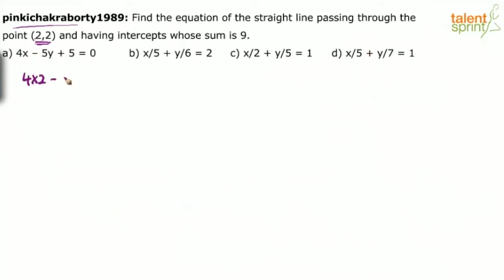Substitute in option A: 4 into 2 minus 5 into 2 plus 5. Is it equal to 0? 4 into 2 is 8, 8 plus 5 is 13. 13 minus 10 is equal to 3, which is not 0. So first option is wrong.